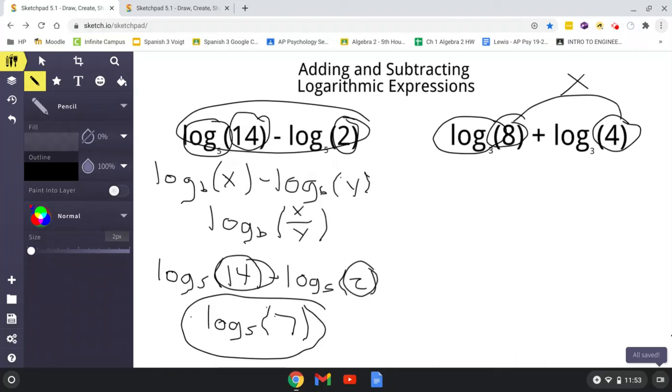So what it's going to look like is log base b. Obviously this is your b value, this is your x value, and this is your y value. Log base b of x times y. That is what it's going to look like. So in this problem that we have above, it would be log base 3 of 8 times 4.